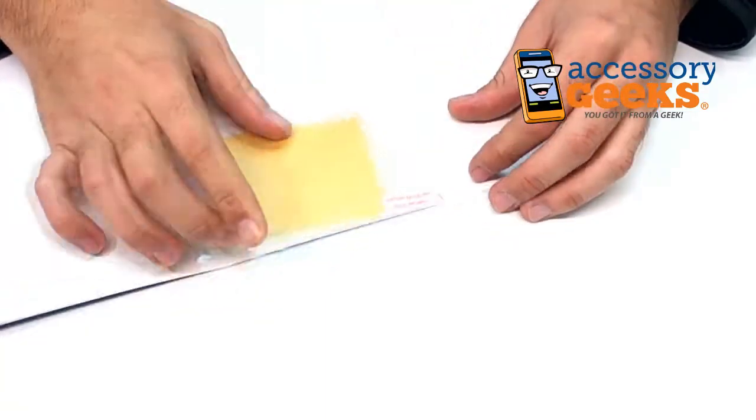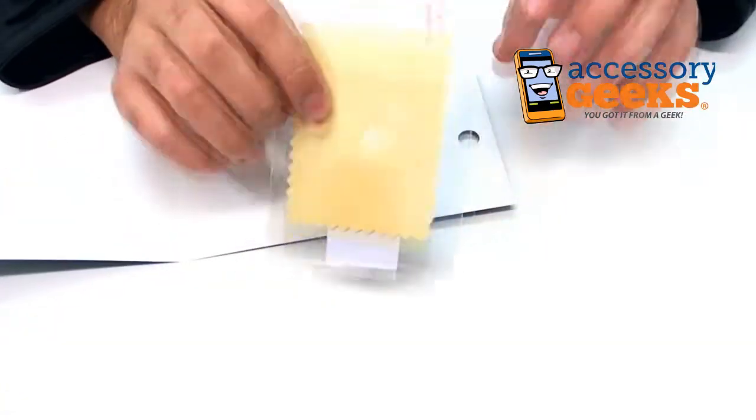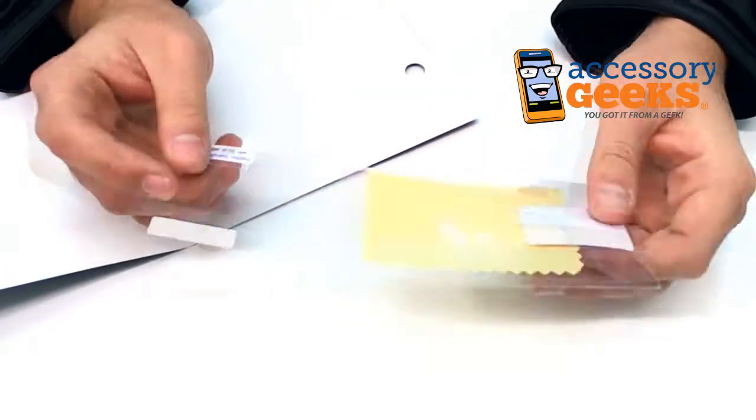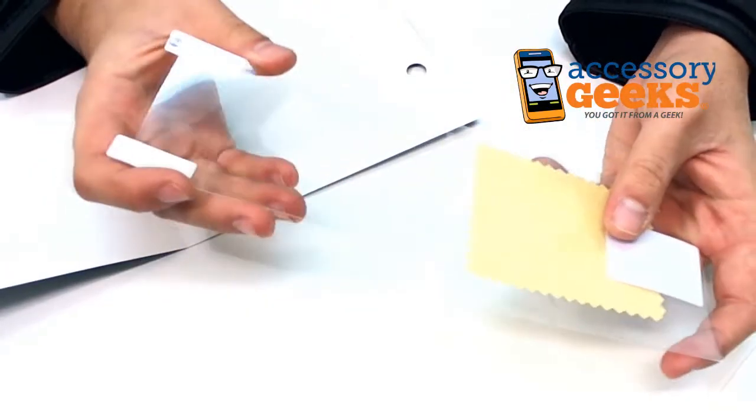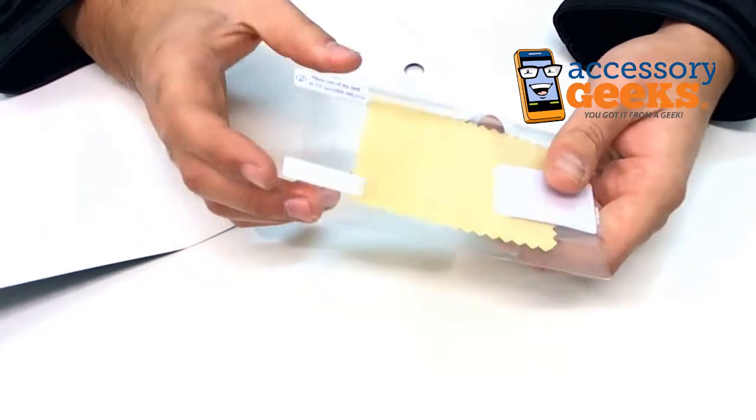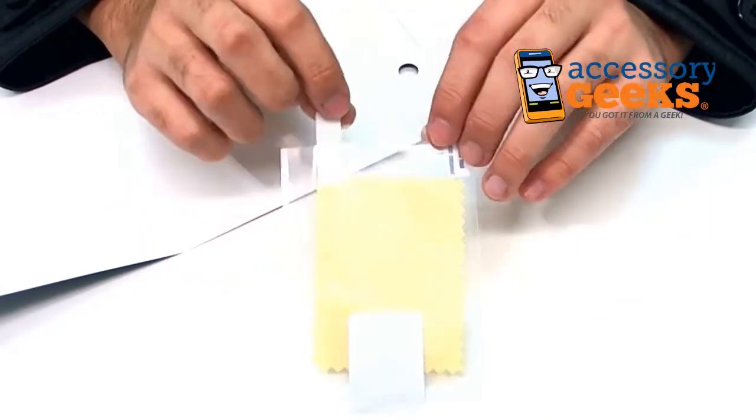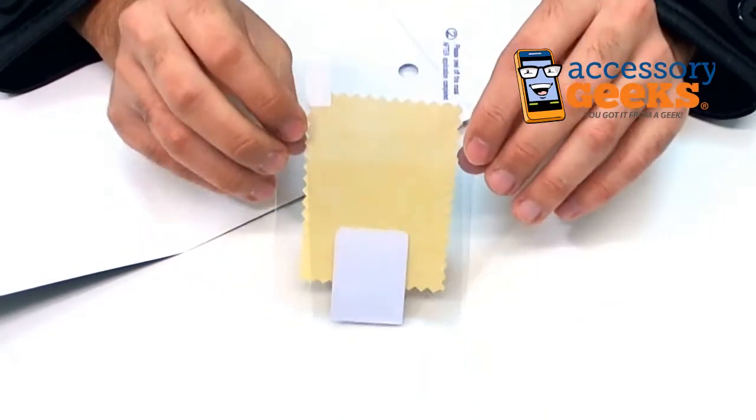Anyway guys, the reason why you need a Screen Protector for your HTC Evo 4G is because most phones nowadays, just like the HTC Evo 4G, don't really have buttons.